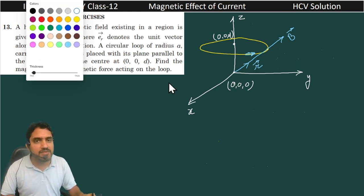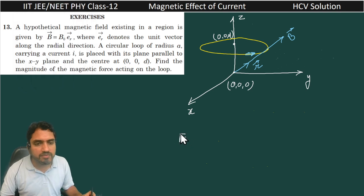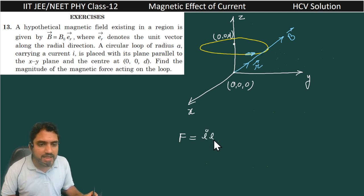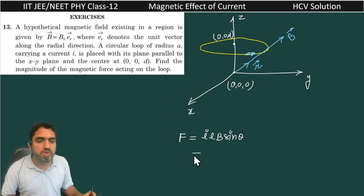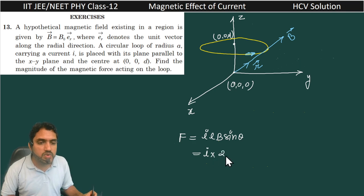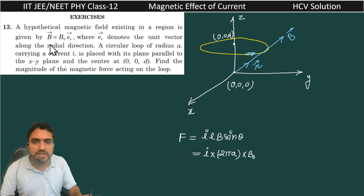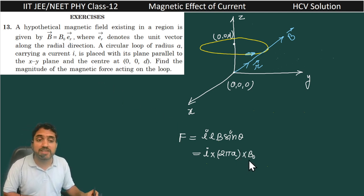Whenever we want to find the magnetic force, F = ILB sinθ. The current I is flowing in the loop, and the total length of the loop is 2πA. The magnetic field magnitude is B₀, as given in the equation.